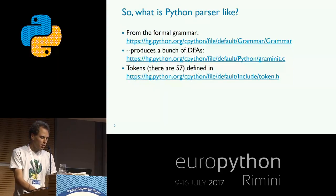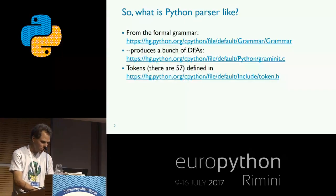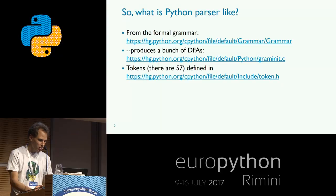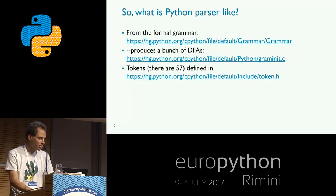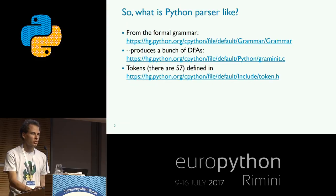We also have parentheses for grouping. The other ingredient is a header file with the definition of all tokens. Python has 57 types of tokens numbered 0 to 56, and numbers above 256 are reserved for non-terminals, which are the ones defined in the grammar.